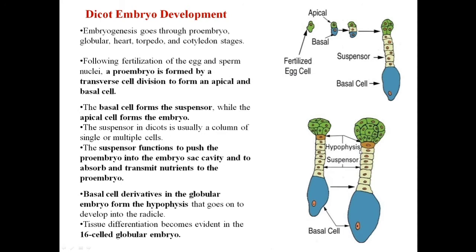In the next change there is one more division happening in the pro-embryo, but this time the division that takes place is a periclinal division. Because of this periclinal division there is a ring of cells formed, called the dermatogen, which will be the epidermis or the outer layer of the embryo. Later on the hypophysis also divides and forms eight cells. The four cells towards the micropylar end will give rise to the root tip or root cap, and the other four cells towards the chalazal end will give rise to the root cortex.